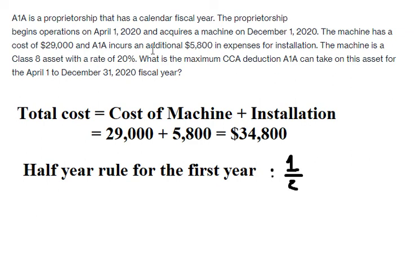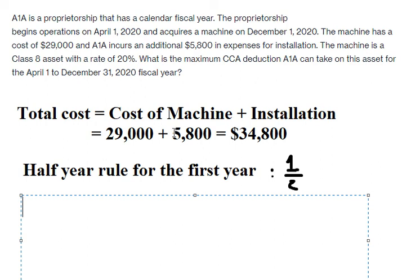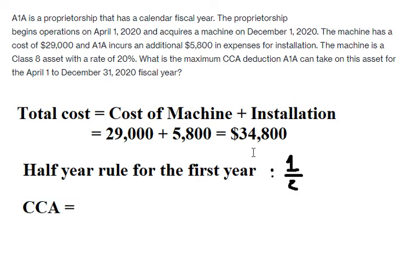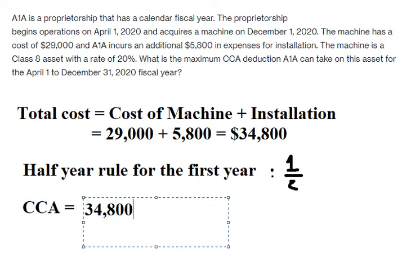Now we can find the maximum CCA — that is the capital cost allowance. CCA equals $34,800, multiplied by 1 over 2, then multiplied by the rate of 20%.